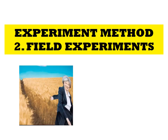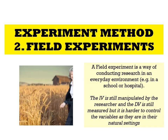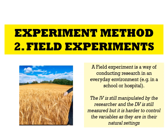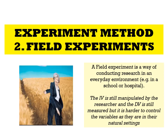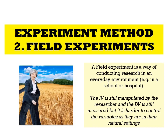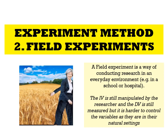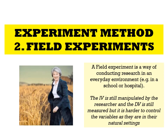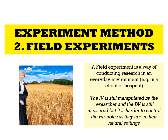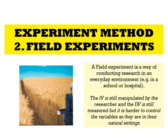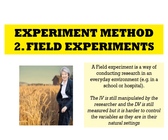The second type of experimental method is a field experiment. A field experiment is a way of conducting research in an everyday environment — somewhere not artificial, such as a school or hospital — somewhere participants are used to. The independent variable is still manipulated and the dependent variable is still measured, but it's harder to control extraneous variables because people are in their natural settings.